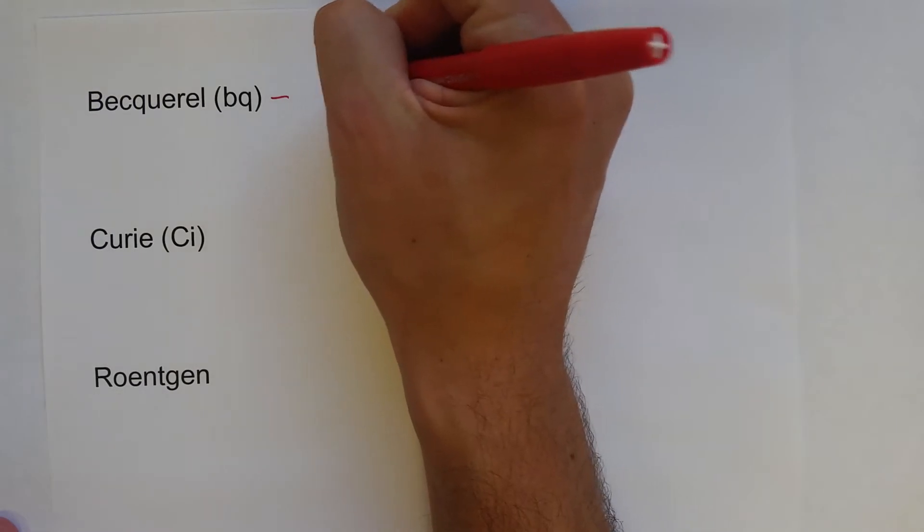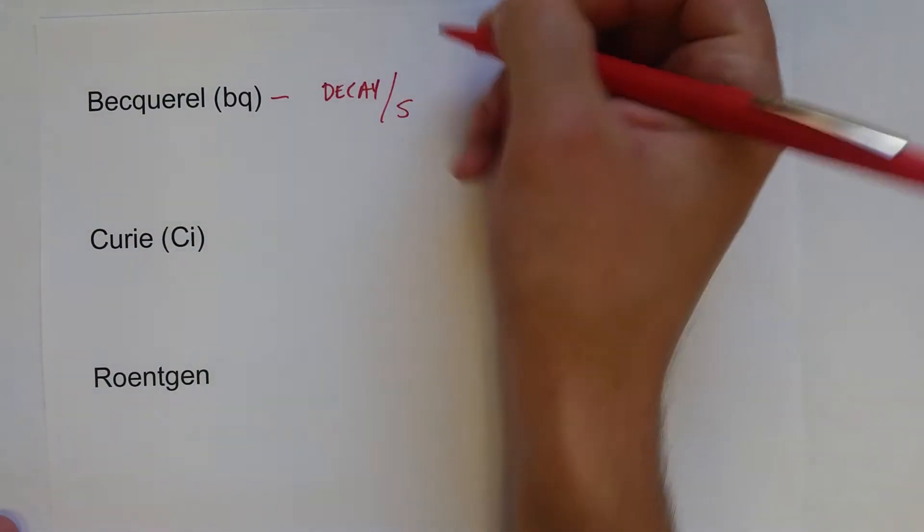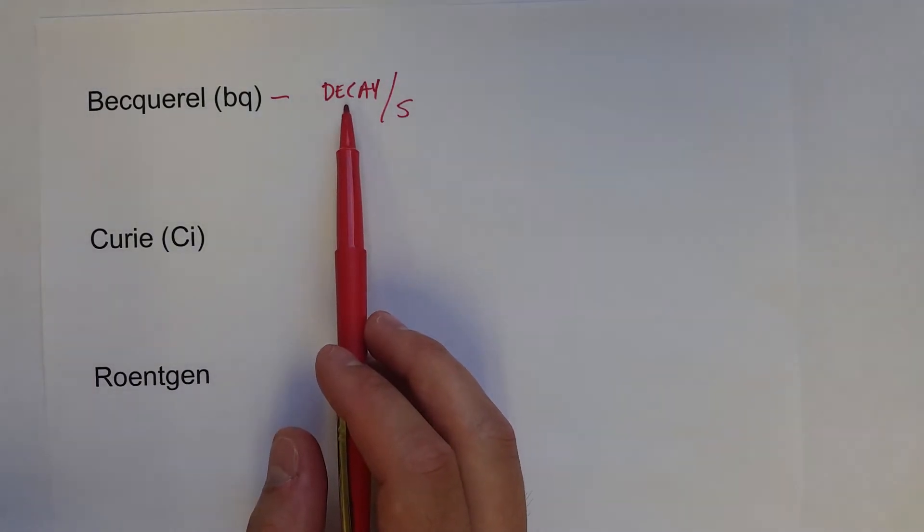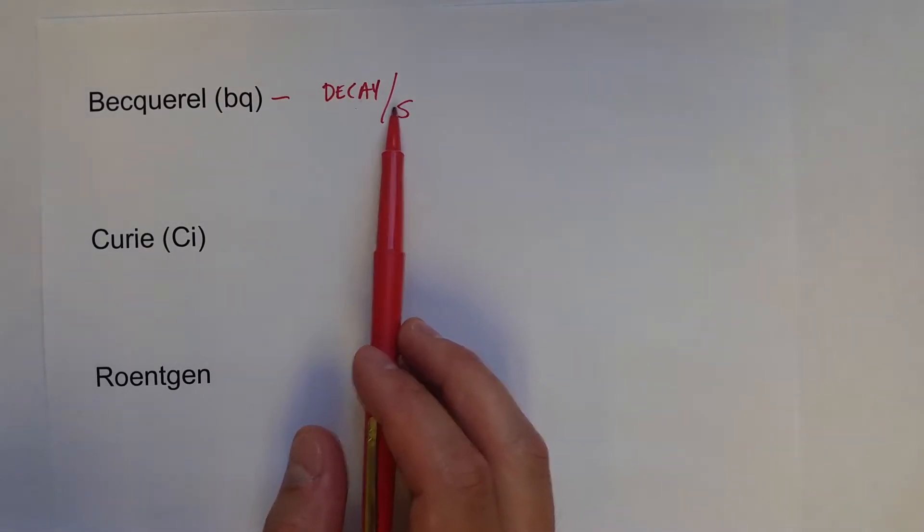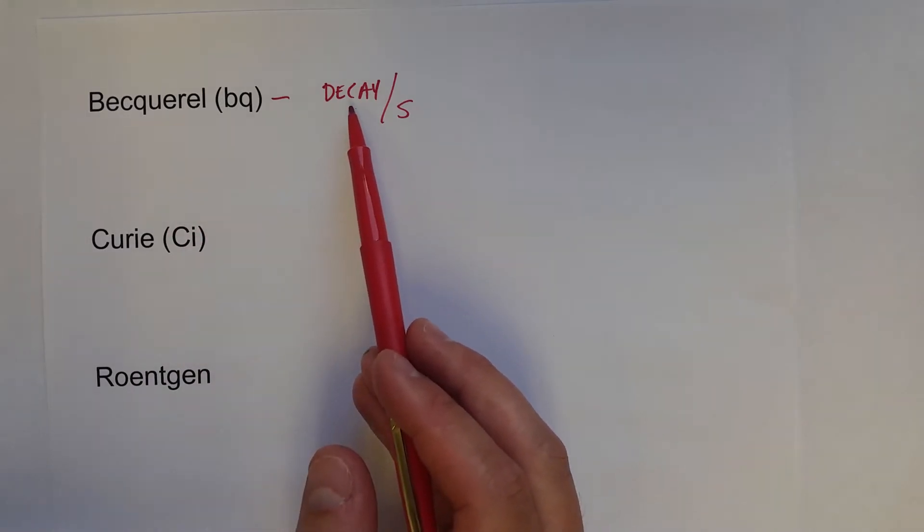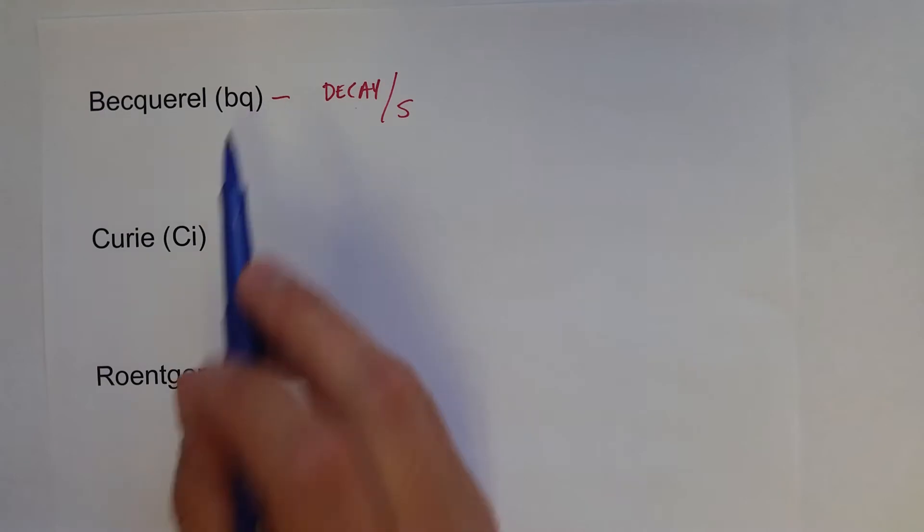First is probably the simplest to understand, and that is the Becquerel, which is a decay event per second - how often a radioactive isotope would decay to produce radiation per unit of time, per second. So however many times a radioactive isotope decays, divide by the unit of time in seconds, and that is the Becquerel, or BQ.